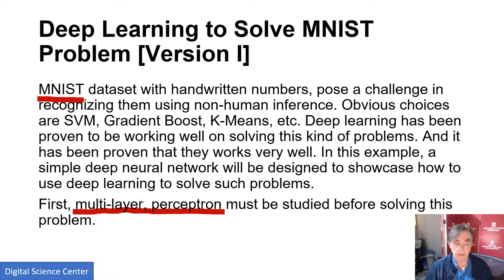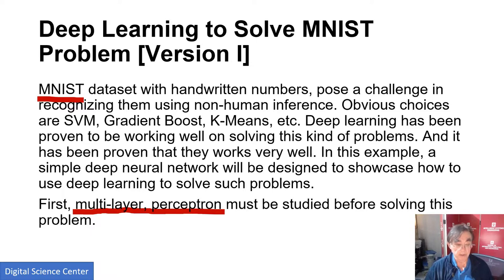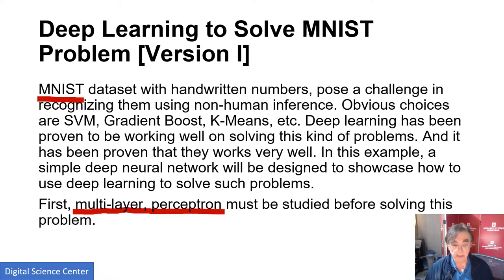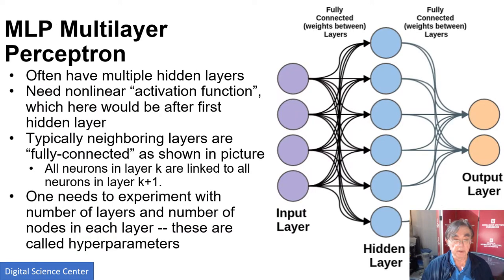Whereas on a state-of-the-art network — a convolutional network with all the various bells and whistles — it would be more like 98.5%. All of this is available on the Google CoLab environment.